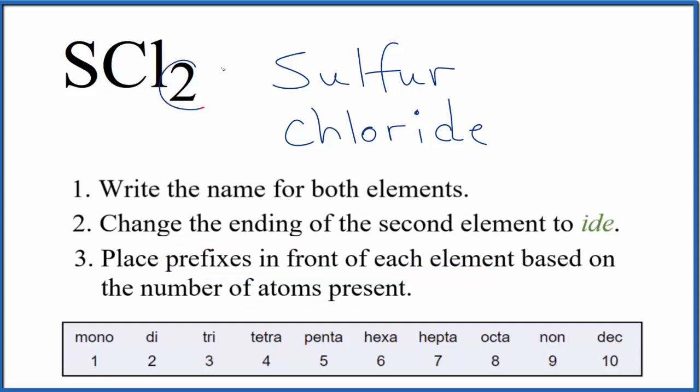For the chlorine though, we have a 2, and we use the prefix di. So we're just going to put di in front of chlorine, and that makes the name for SCL2 sulfur dichloride. And note this is a lowercase d for the second name.